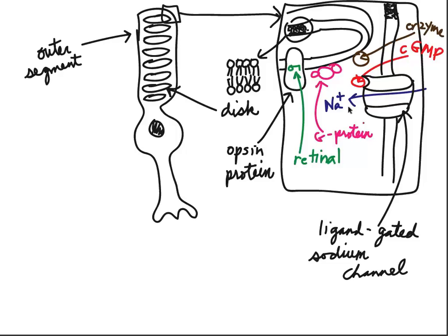When it opens, sodium can flow into this neuron because of both the electrical gradient and the concentration gradient. Those are the various parts of the photoreceptor we need to be concerned about for phototransduction. I'll now explain what is happening in the dark, so we can understand what will happen in the light that causes us to be able to see.